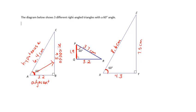Now we're going to write down the lengths in the respective spaces in the table. We'll put all the hypotenuses in the hypotenuse section, all the opposites in the opposite section, and all the adjacents in the adjacent section. Remember: opposite means across from the angle, adjacent means attached. These terms are really, really important.